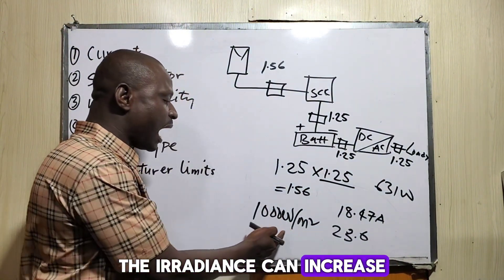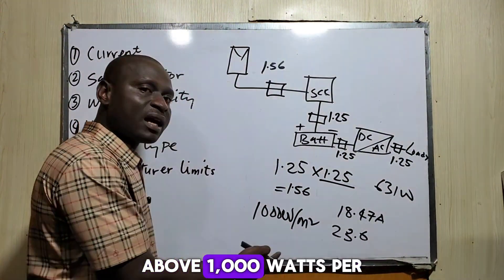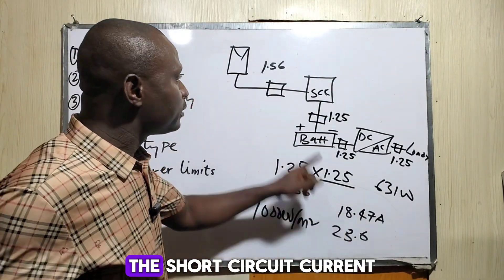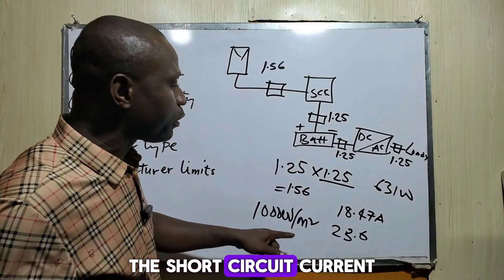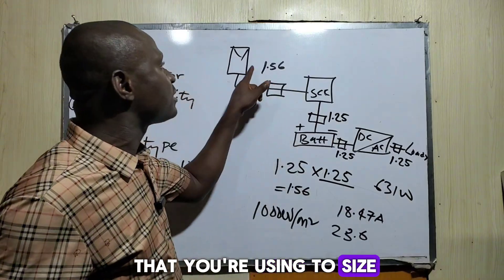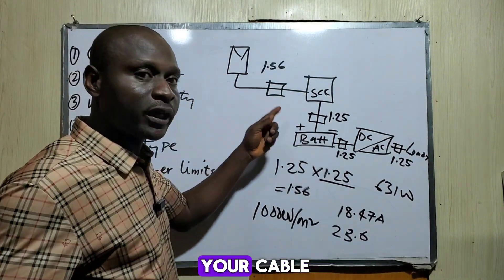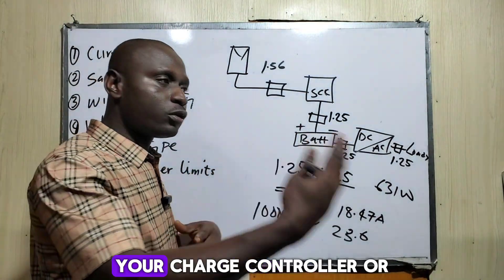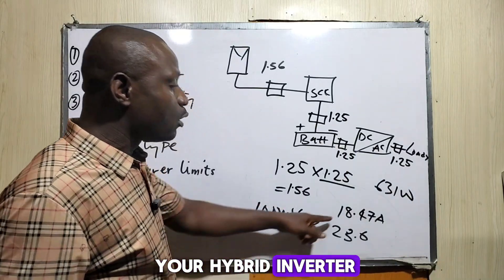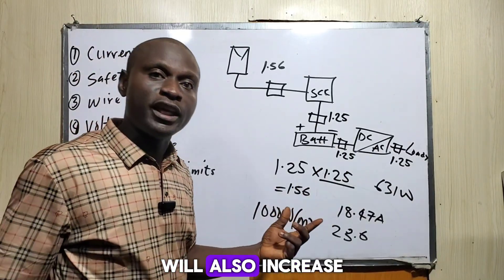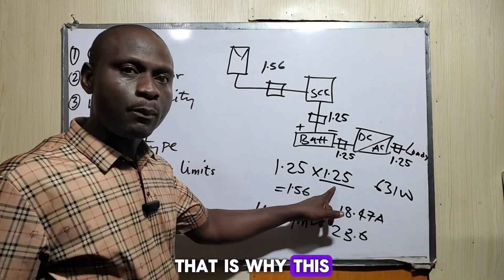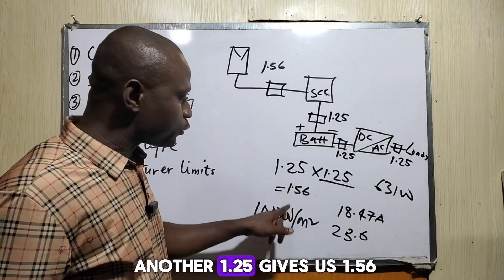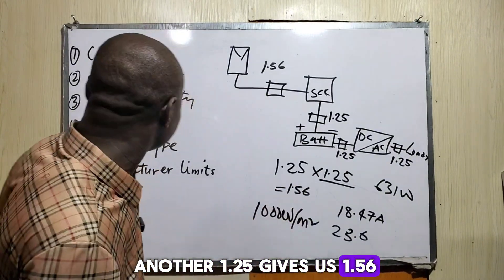The irradiance can increase above 1,000 watts per square meter, and when it does, the short-circuit current used to size breakers or cables between the solar panel and the charge controller or hybrid inverter will also increase. That is why 1.25 multiplied by another 1.25 gives us 1.56.